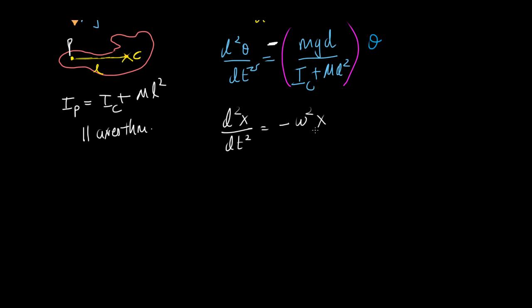So d2x by dt squared is minus omega squared x. This is the general equation of a simple harmonic motion. So just that instead of x we have a theta here.